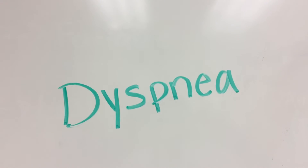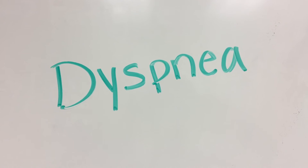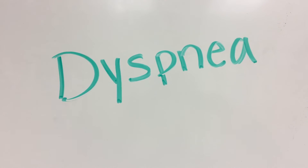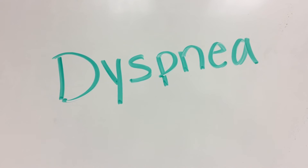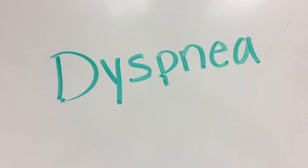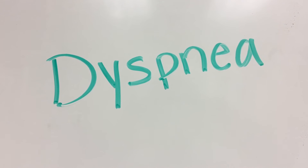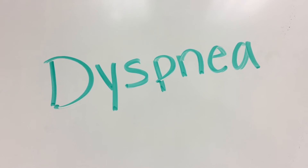Dyspnea, also known as shortness of breath, is caused by inflammation and mucus buildup blocking the airways and smooth muscle contraction, making it difficult for air to enter the lungs.